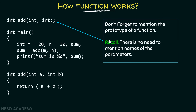As we know, I have not written the definition before calling the function. Therefore, I should mention the prototype of the function here. There is no need to mention the names of the parameters — you should only mention the data types of the parameters as well as the return type of the function. This is the way we should write down the function prototype.